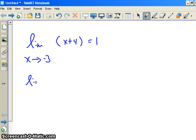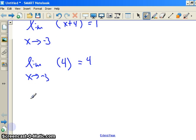What if I said the limit as x approaches negative 3 of 4? Well, 4 is a constant. How do you graph that? If you graph y equals 4, you get a horizontal line, right? So no matter what the x value is, y is always 4, so the limit is 4.